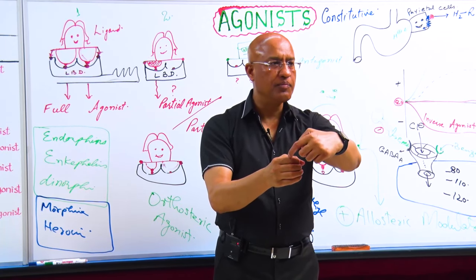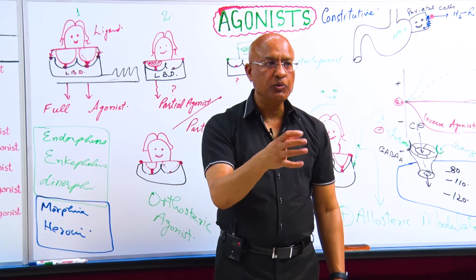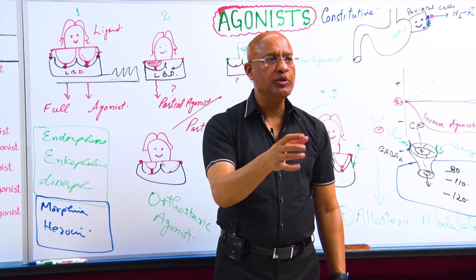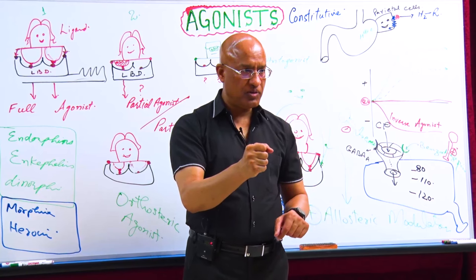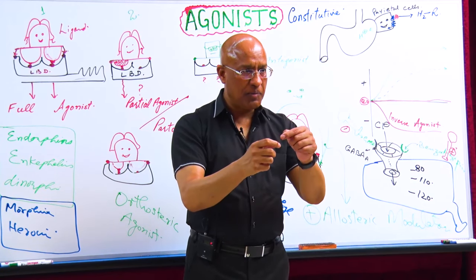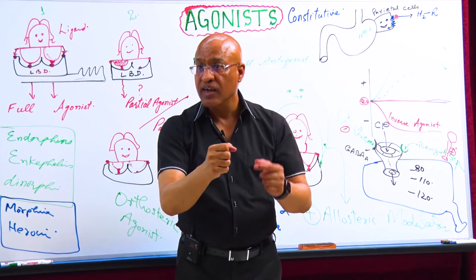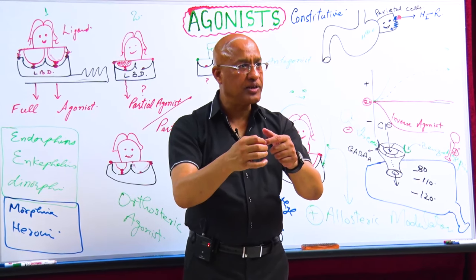Benzodiazepines came. Benzodiazepines simply increase the frequency of opening. Rather than 100 per unit time, maybe now it's opening and closing 200 times. But if you don't give benzodiazepines and you give a lot of GABA, GABA will not increase the frequency. GABA will bind at another site and disturb the channel so much it will remain open for a very long time.